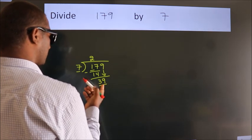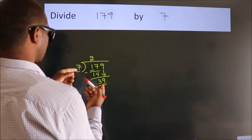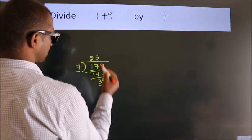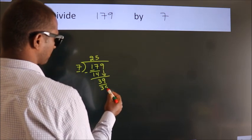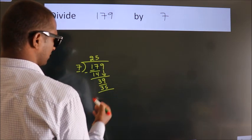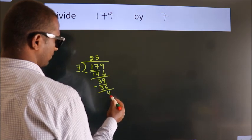A number close to 39 in the 7 table is 7 fives, 35. Now we subtract. We get 4.